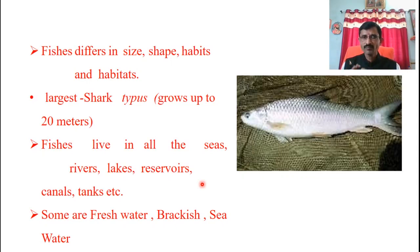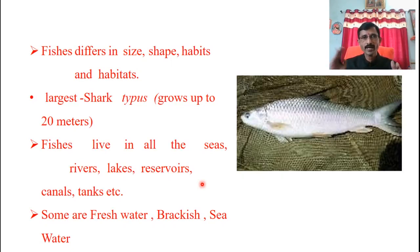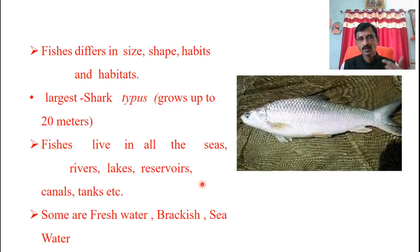Some fishes inhabit fresh water - the water we regularly use at home is fresh water. Brackish water: what is meant by brackish water? Some fishes are found in brackish water. Brackish water means a combination of fresh water and marine water - that mixture is called brackish water. And sea water - you know very well Mumbai, Ratnagiri, all are sea water areas. Some fishes live in fresh water, some in brackish water, and some in sea water.